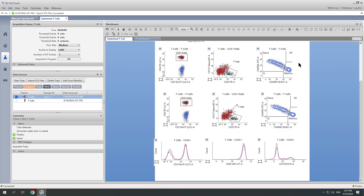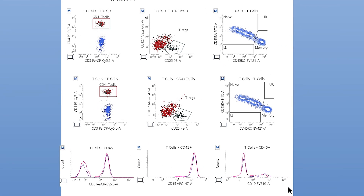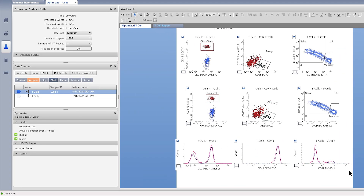Now we have successfully completed the assay transfer to the Lyric in San Diego. Let's see how the data looks. The first row is the data collected on the instrument in San Jose, and the second row is the data we just collected in San Diego. The last row shows the comparison and overlay between the two data. We have successfully standardized the assay between the two instruments.